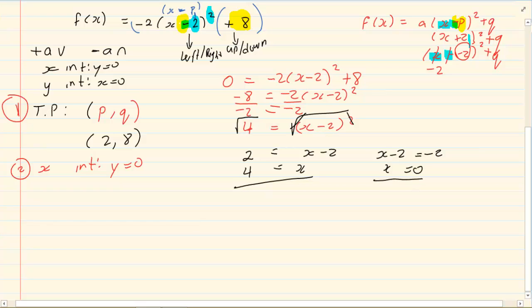Then we have x is equal to 4 and on this side we have x is equal to 0. Now that is my x intercepts. It means that at this specific point y is 0. Now we have our turning points and we have our x intercepts.